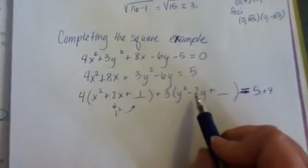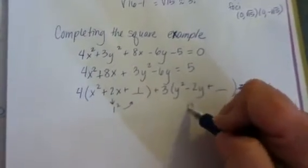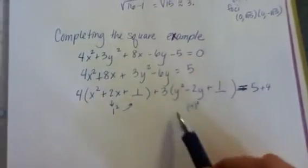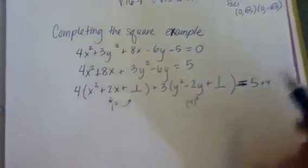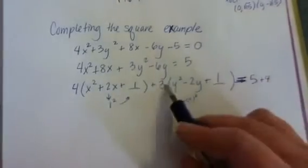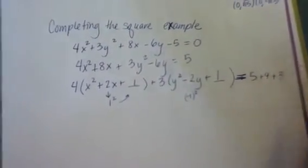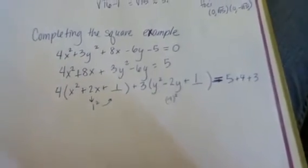Okay, then we do the same thing here. Half of negative 2 is negative 1, and negative 1 squared is positive 1. But rather than adding a value of 1 to the left side, I'm actually adding a value of 3 times 1, which is 3. So I also need to add 3 to that side.